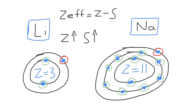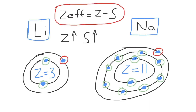Qualitatively, as the nuclear charge increases, the outer valence electrons are able to feel more of the nuclear charge as you move down a group. However, as S increases — the screening via the core electrons — the valence electron is blocked from the nuclear charge more and more by these core electrons, so they can't feel as much of the nuclear positive charge. By looking at the equation for Z effective, if we increase Z and we increase S, these two changes counterbalance and offset each other. The result is that effective nuclear charge ends up not changing by very much as we move down a group in the periodic table.